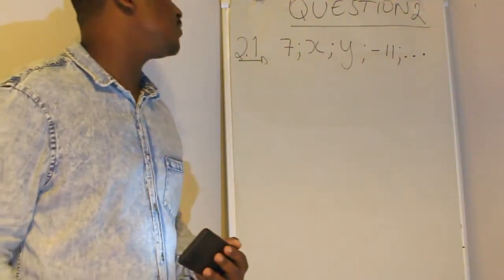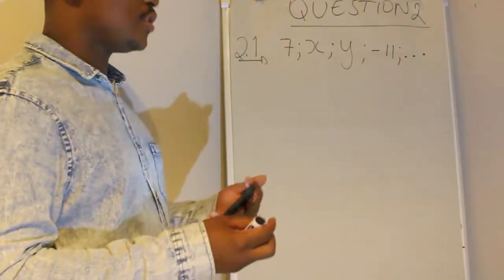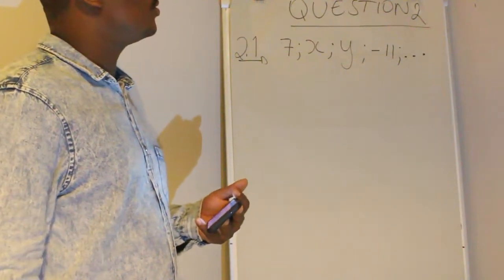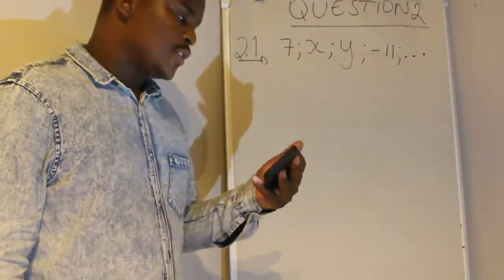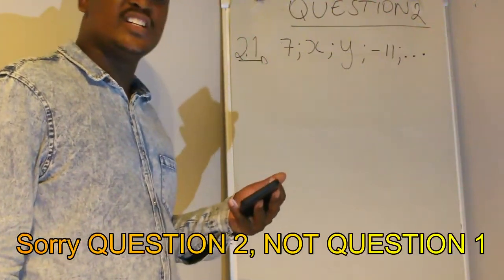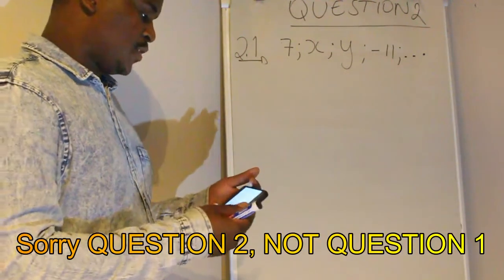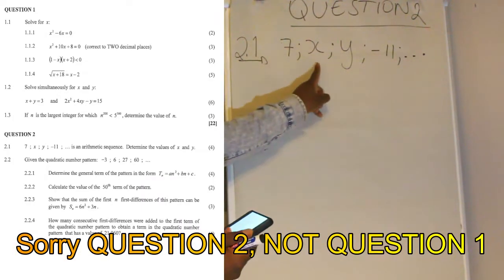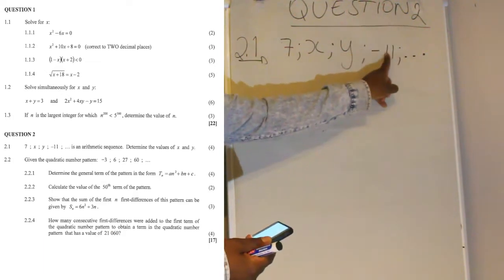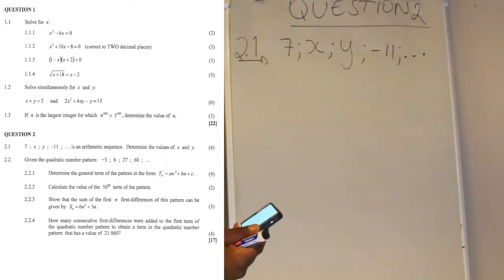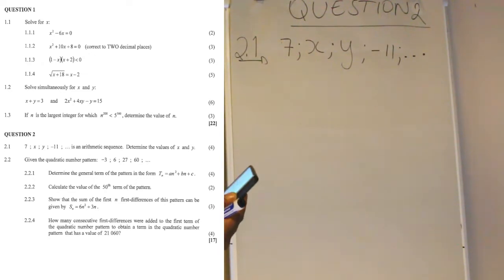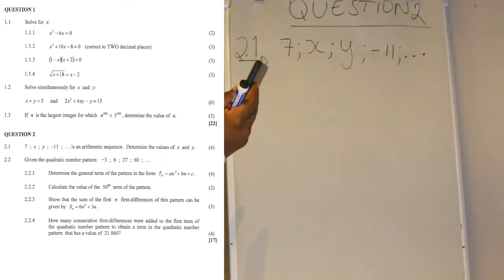Hello, thank you for watching this video. In this video I will be doing question 2 of November 2020 mathematics paper 1. Question 2.1 reads as follows: 7, x, y, and negative 11 and so on is an arithmetic sequence. Determine the values of x and y.